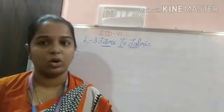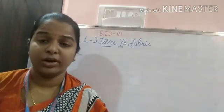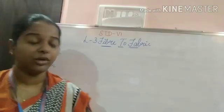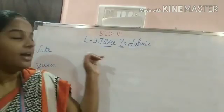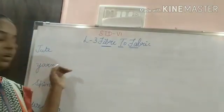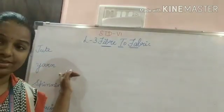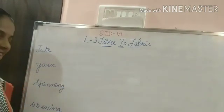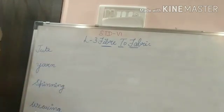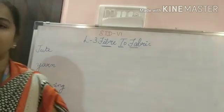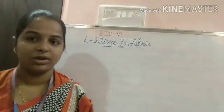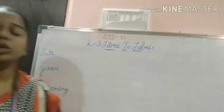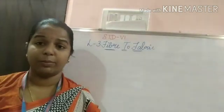We had learned about cotton. In today's class we are going to learn about the jute plant, what is yarn, and the two processes — spinning and weaving — that we are going to discuss.